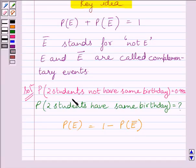Now probability of not E is equal to 0.992. So we get probability of E is equal to 1 minus 0.992, which is equal to 0.008.